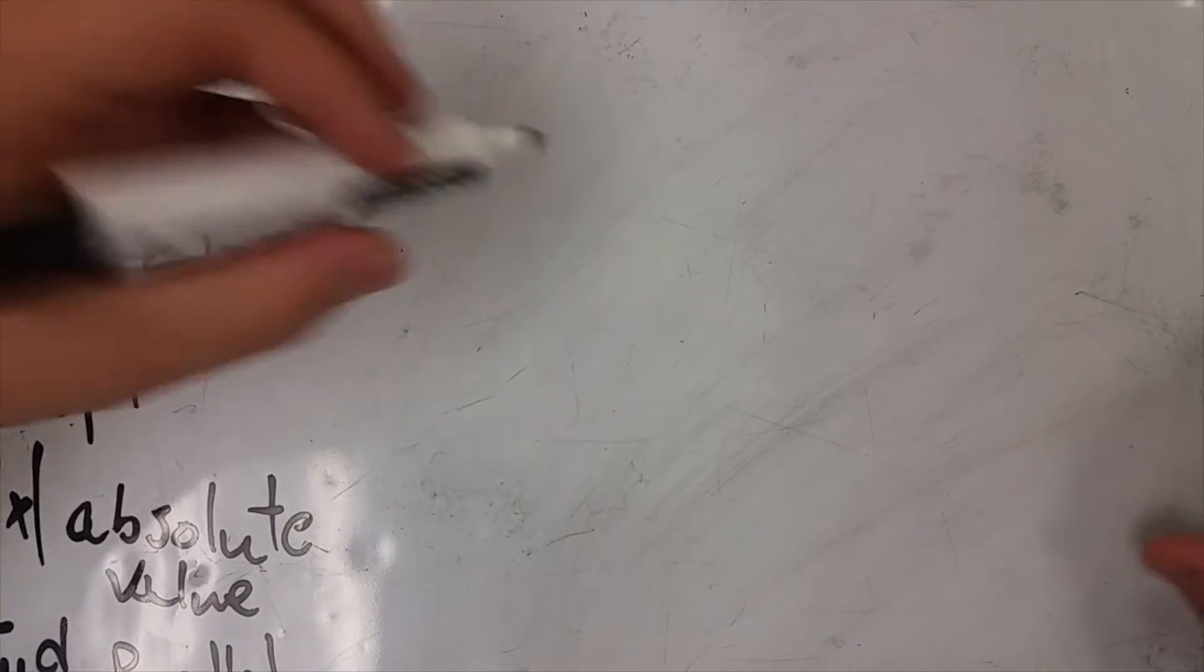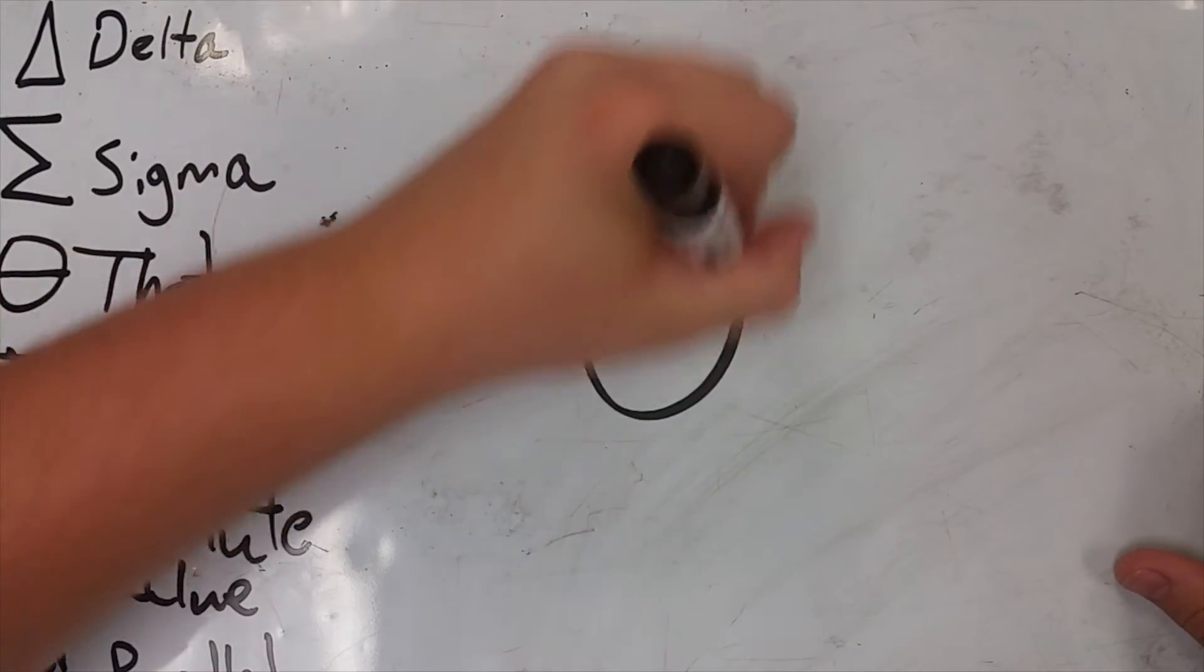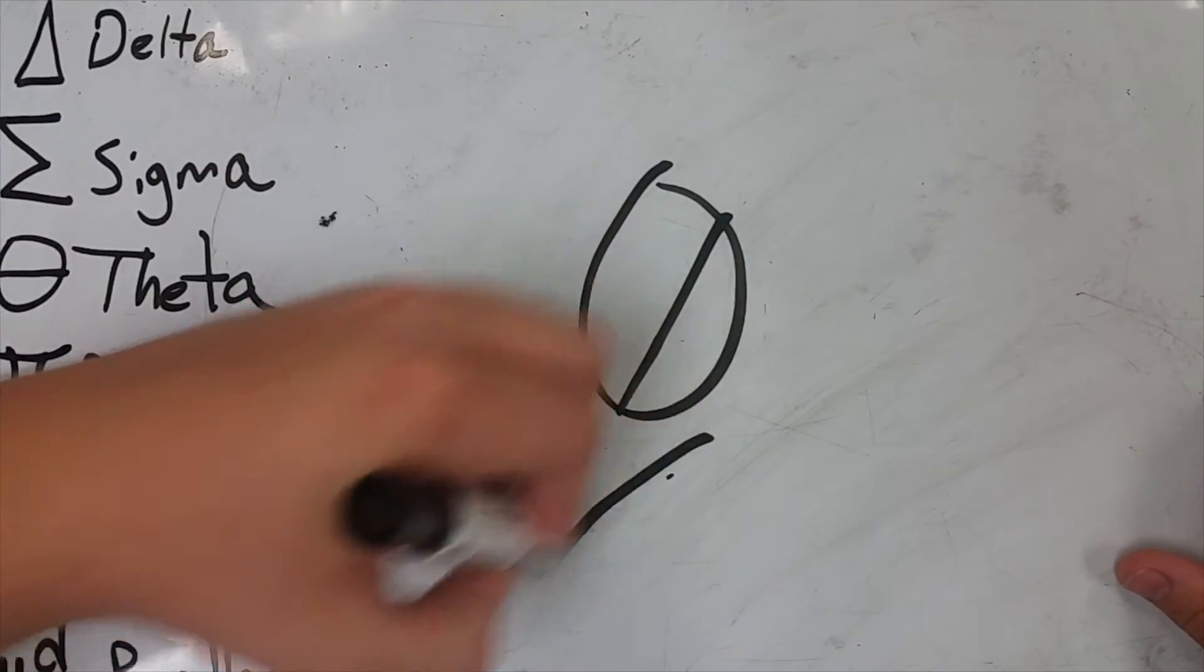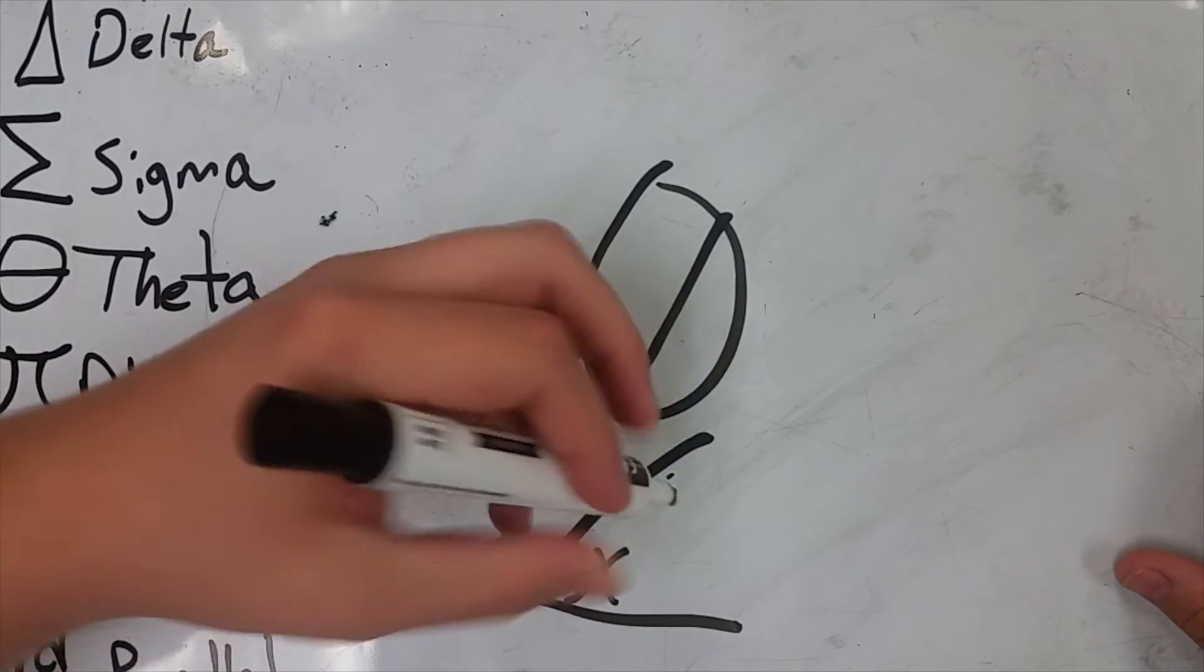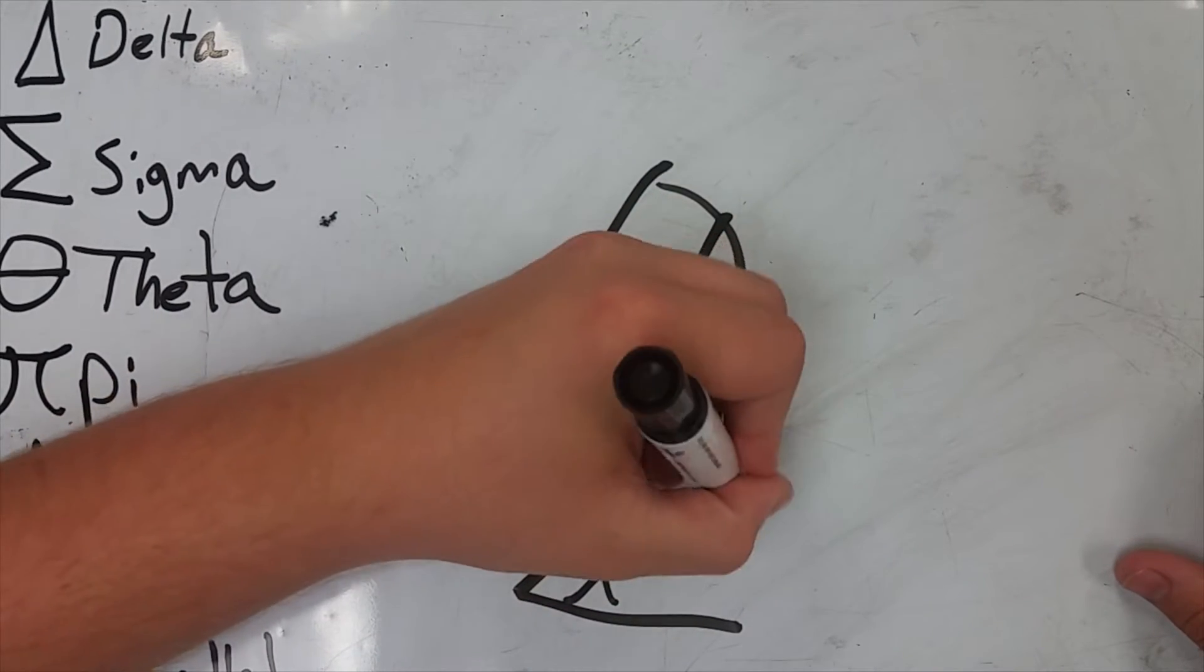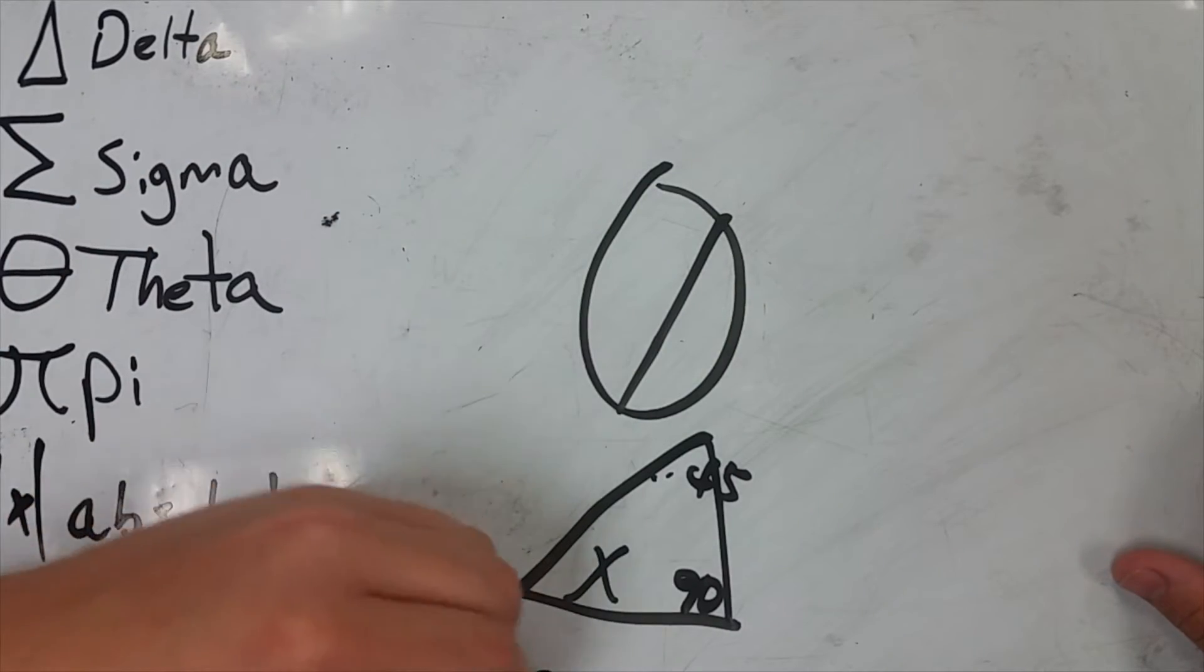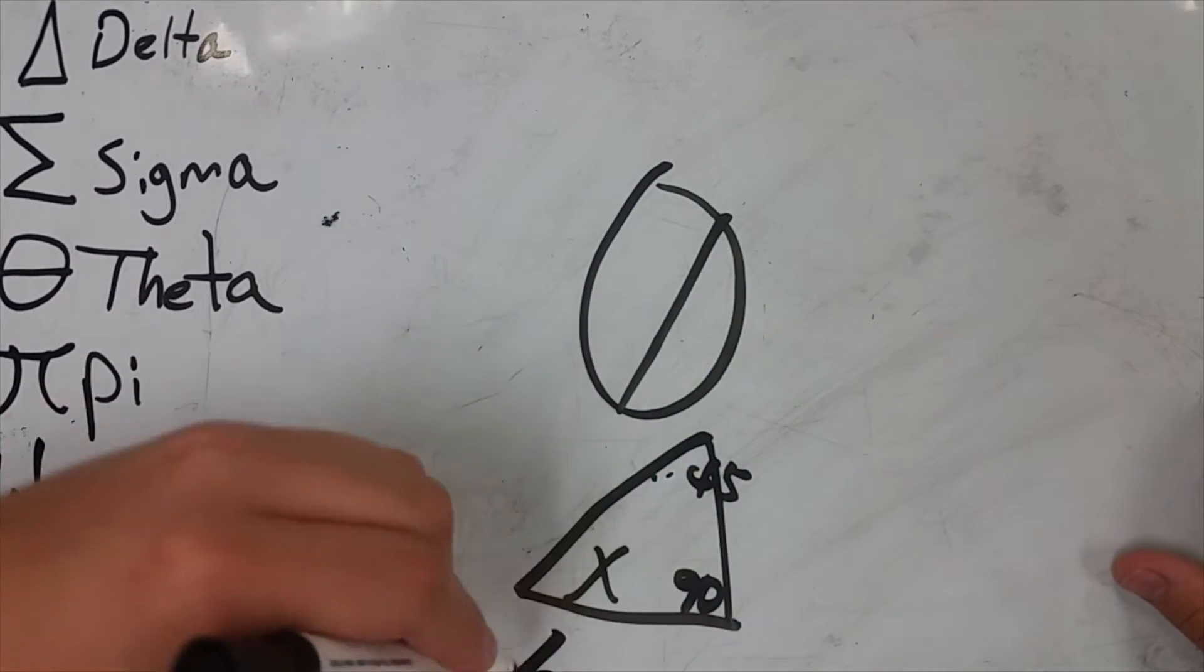The next word we're going to go over is Theta. Theta you see in an angle. So like in geometry when you're trying to find angles, you have Theta, and then you have like 45 and 90. Instead of X we have Theta in physics. That's for an angle of interest.